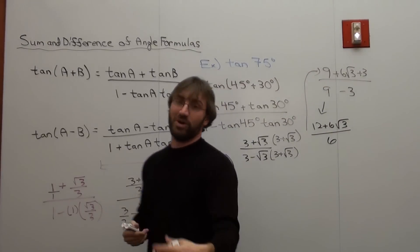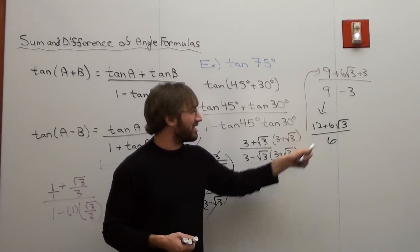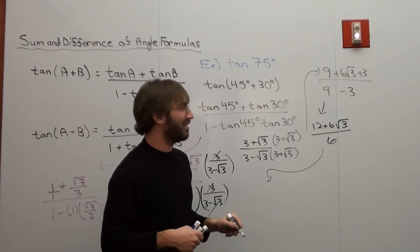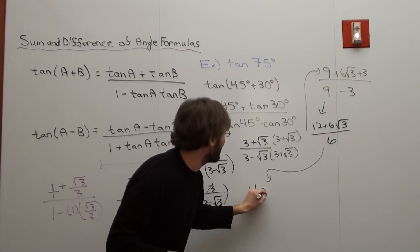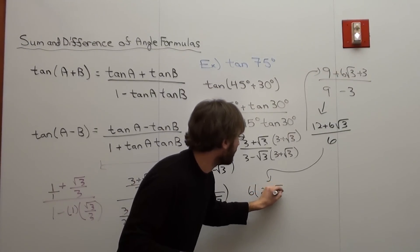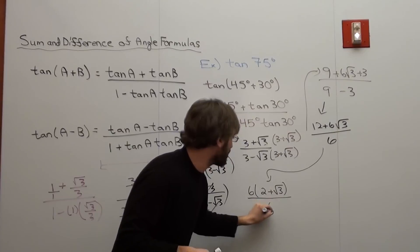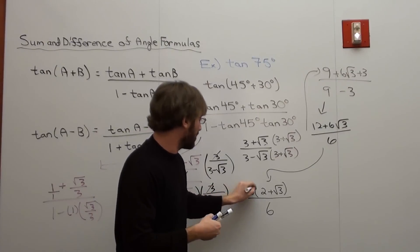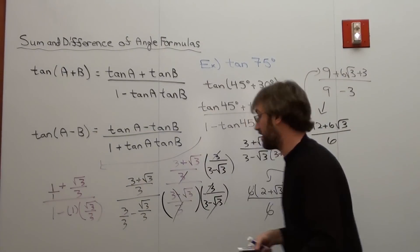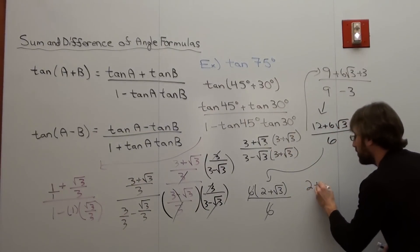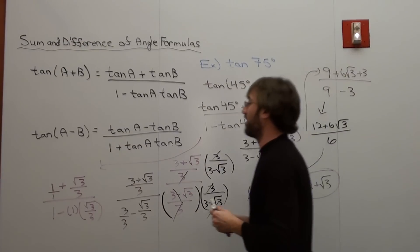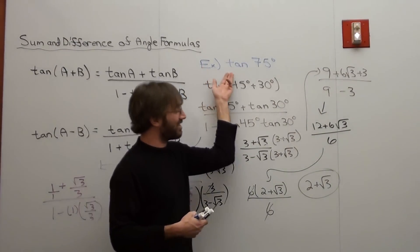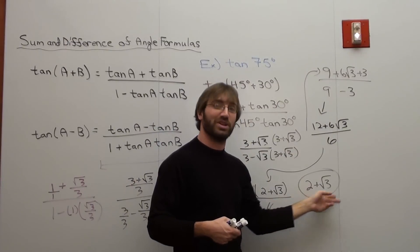Which simplifies to 12 plus 6√3 over 6. You can actually factor out a 6 from the numerator. This is one of those terrible lessons. And you've got 2 plus √3 over 1. So my answer is 2 plus √3. A lot of work for very little gain. But actually you still do know what the exact value of the tangent of 75 degrees is: it's 2 plus √3.